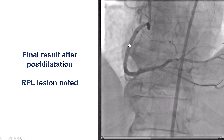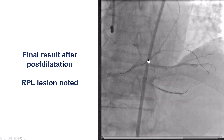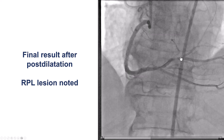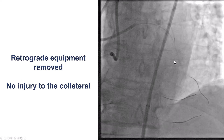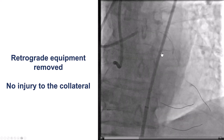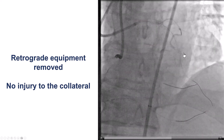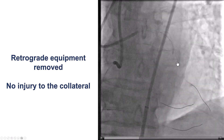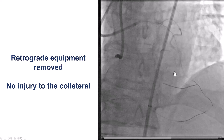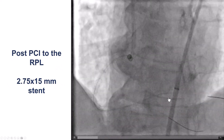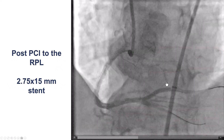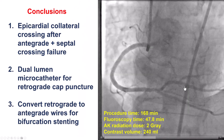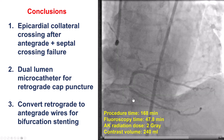We post-dilated and got a nice result — TIMI flow into the PDA and TIMI flow into the right posterolateral. However, there was a significant lesion in the posterolateral that was not seen well before. So we first removed the retrograde microcatheter, confirmed that there was no injury in the epicardial collateral, and then stented the right posterolateral with a 2.75 by 15 mm stent. That gave a nice result, with flow restored in all branches of the distal right coronary artery.